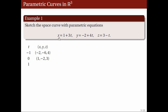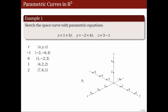When t equals 1, we get x equals 4, y equals 2, and z equals 2. And when t equals 2, we get x equals 7, y equals 6, and z equals 1. So let's try to plot these points in a three-dimensional coordinate system. When t equals negative 1, we have the point negative 2, negative 6, 4. When t equals 0, we have the point 1, negative 2, 3. When t equals 1, we get the point 4, 2, 2. And when t equals 2, we get 7, 6, 1.